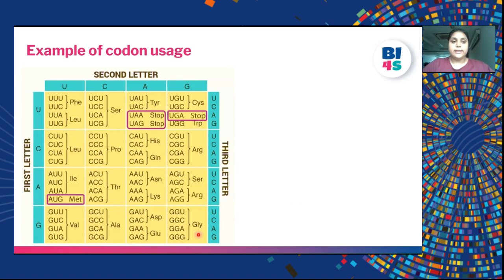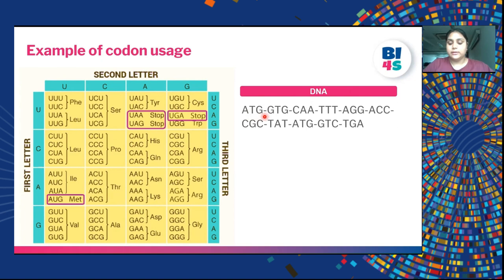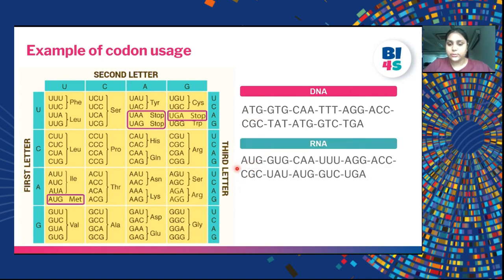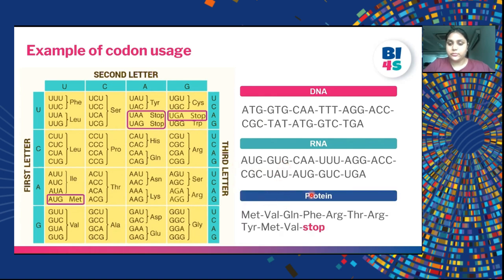In the genetic code, AUG gives the start codon (methionine). UAA, UAG and UGA are the three stop codons which do not code for any amino acid and tell the ribosome to stop translating. For a given DNA sequence, the corresponding RNA is formed, and from that RNA the protein is built: AUG (methionine), GUG (valine), CAA (glutamine), UUU (phenylalanine), AGG (arginine) and so forth, until the stop codon UGA ends the protein sequence.